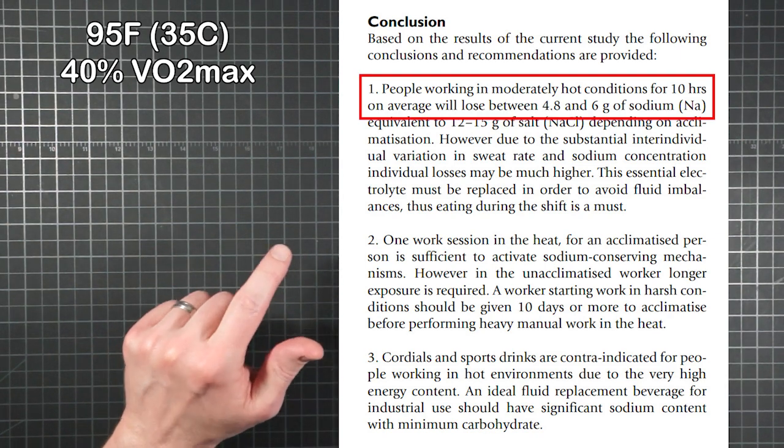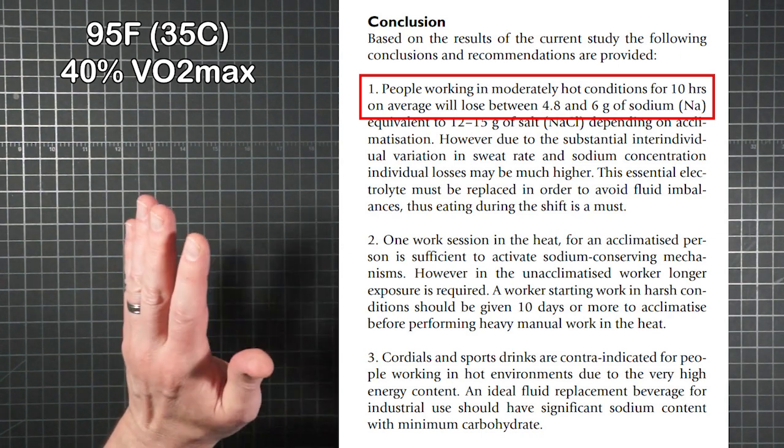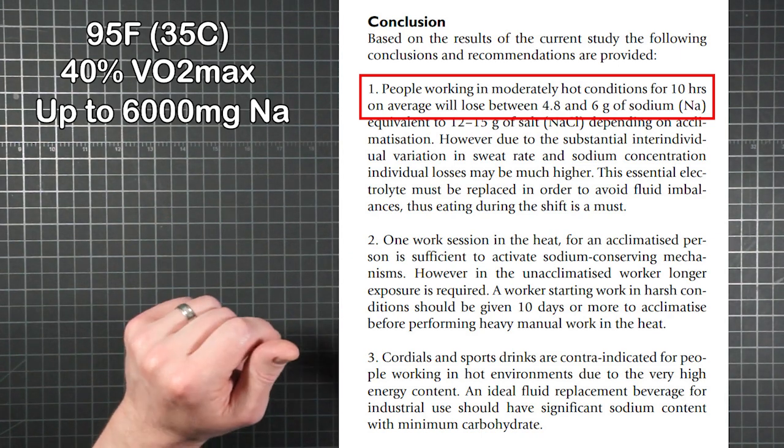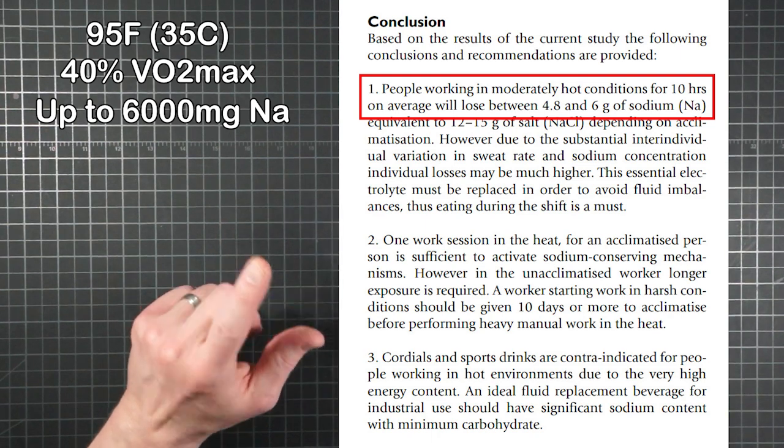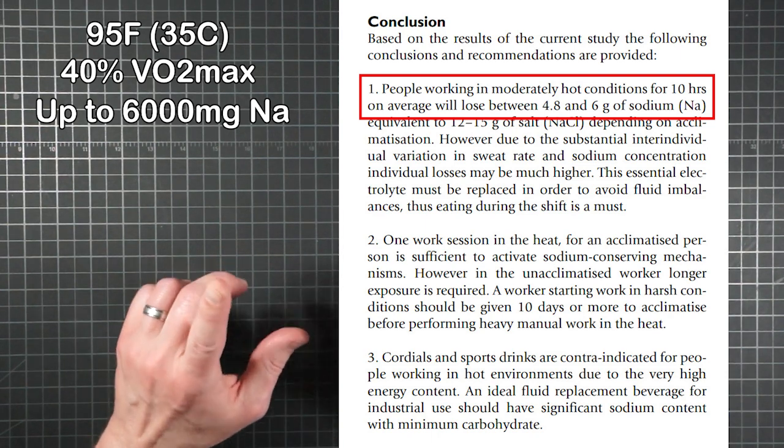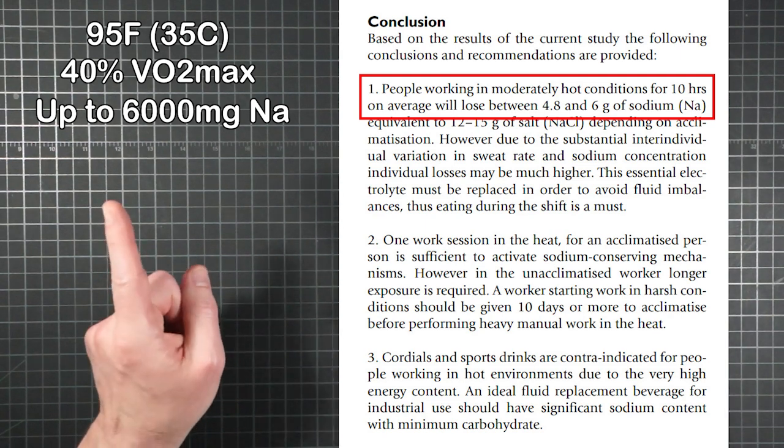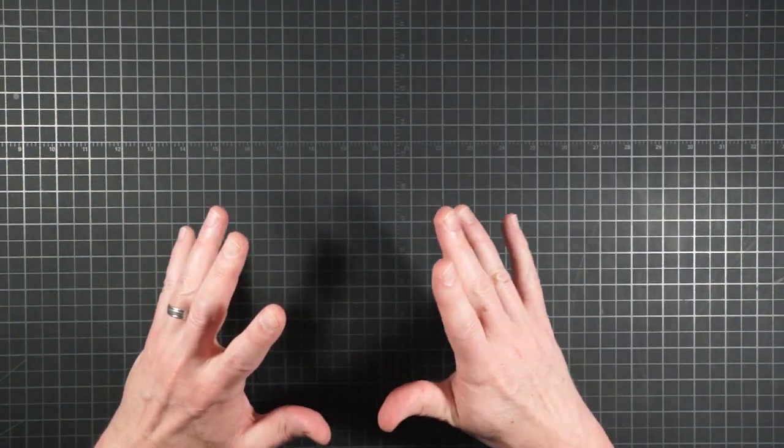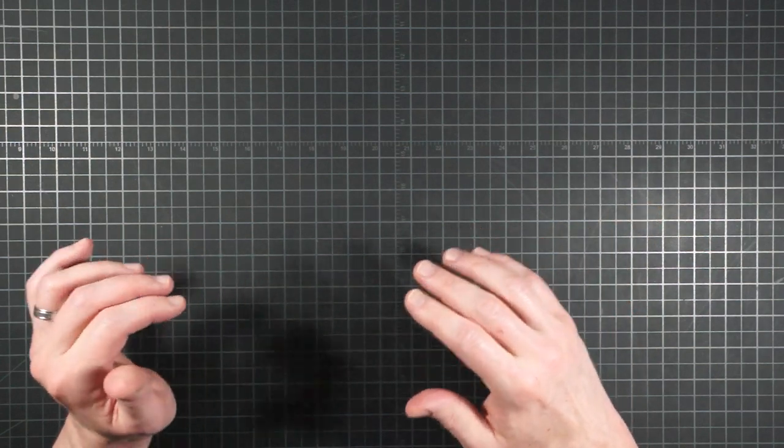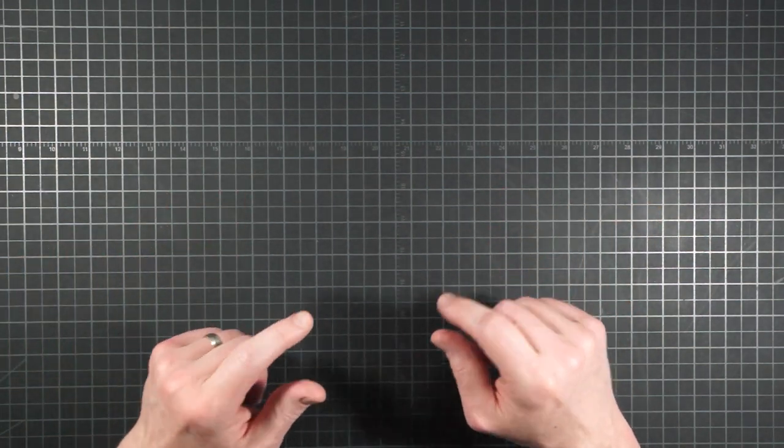Over a 10 hour workday like this, sodium losses would average between 4.8 and 6 grams and that's up to 6,000 milligrams of sodium per day. That's significantly higher than the Gatorade study despite a more casual pace because it was hotter. So you can start to envision a series of curves on a graph that plots sodium needs against effort levels and temperature.